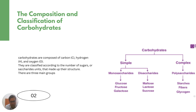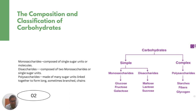Now we will talk about further concentrations. Monosaccharides are composed of simple sugar units or molecules, and disaccharides are composed of two monosaccharides, or you can say two single sugar units. Polysaccharides are made of many sugar units linked together to form long, sometimes branched chains.